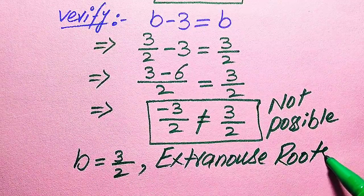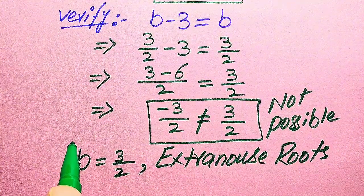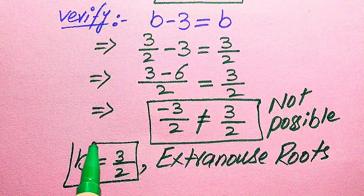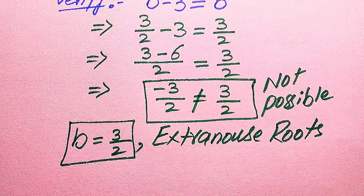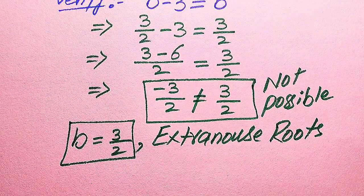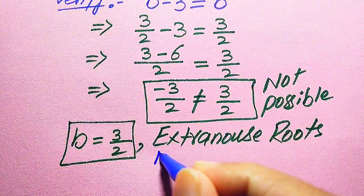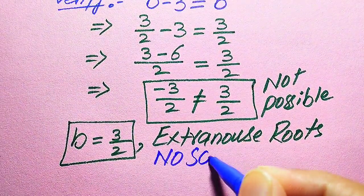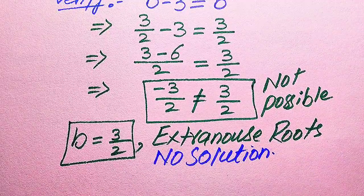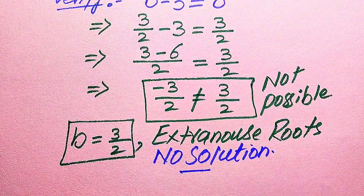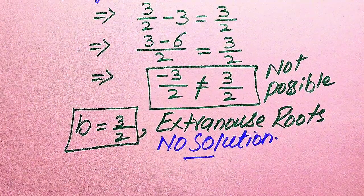So b = 3/2 does not satisfy the given equation. We call b = 3/2 an extraneous root. Roots which do not satisfy the given equation are called extraneous roots. Since we cannot get any value of b that satisfies the equation, we conclude that this equation has no solution.